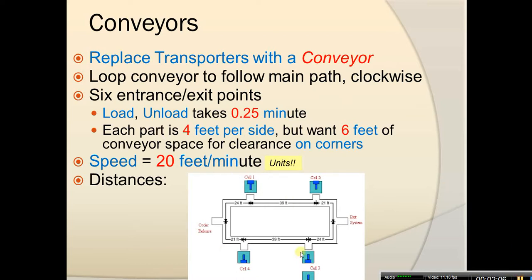Here you can see the schematic drawing of the machines in cell 1, cell 2, cell 4, and two machines in cell 3, as well as the conveyor including the distances between different segments of this conveyor.